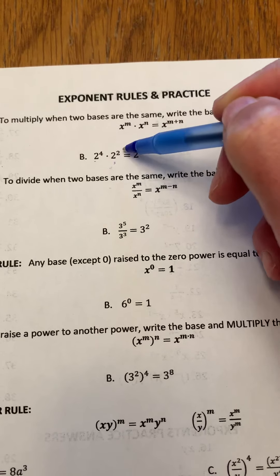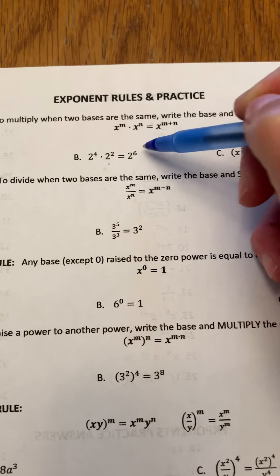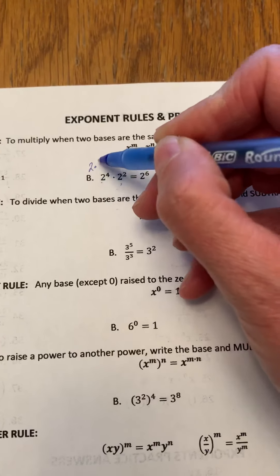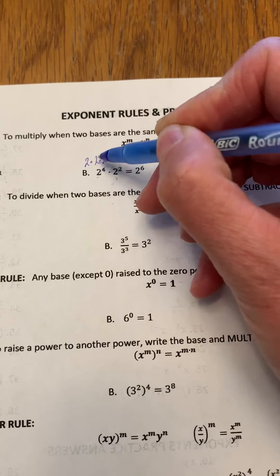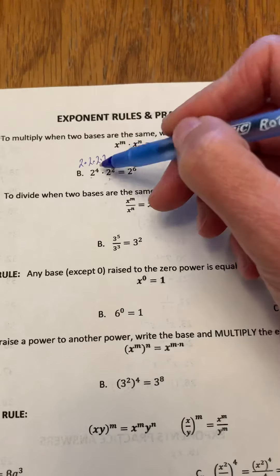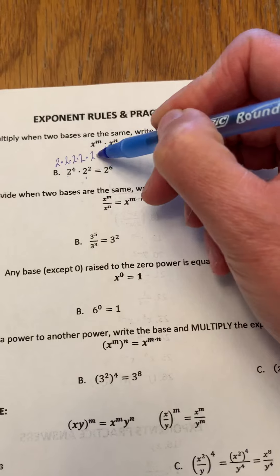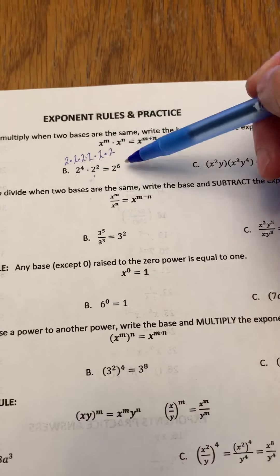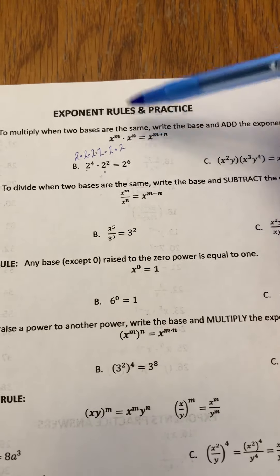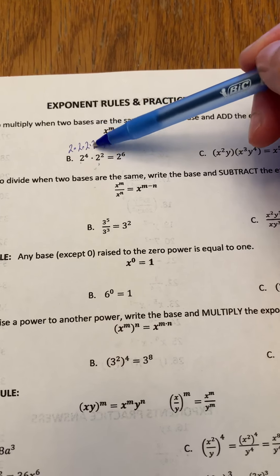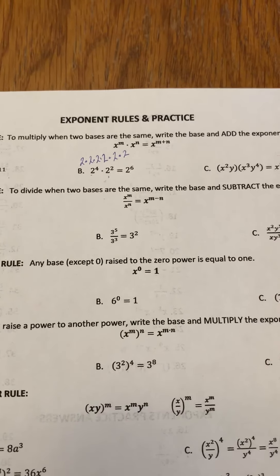Same thing here: 2 to the exponent 4 times 2 to the exponent 2 is simply 2 to the exponent 6. That's because this represents 2 times 2 times 2 times 2—that's what that exponent 4 means—times 2 times 2, which is 2 squared. We can shortcut this by adding the exponents because we can clearly see when you write it out like this: 1, 2, 3, 4, 5, 6—we multiply 2 by itself 6 times.